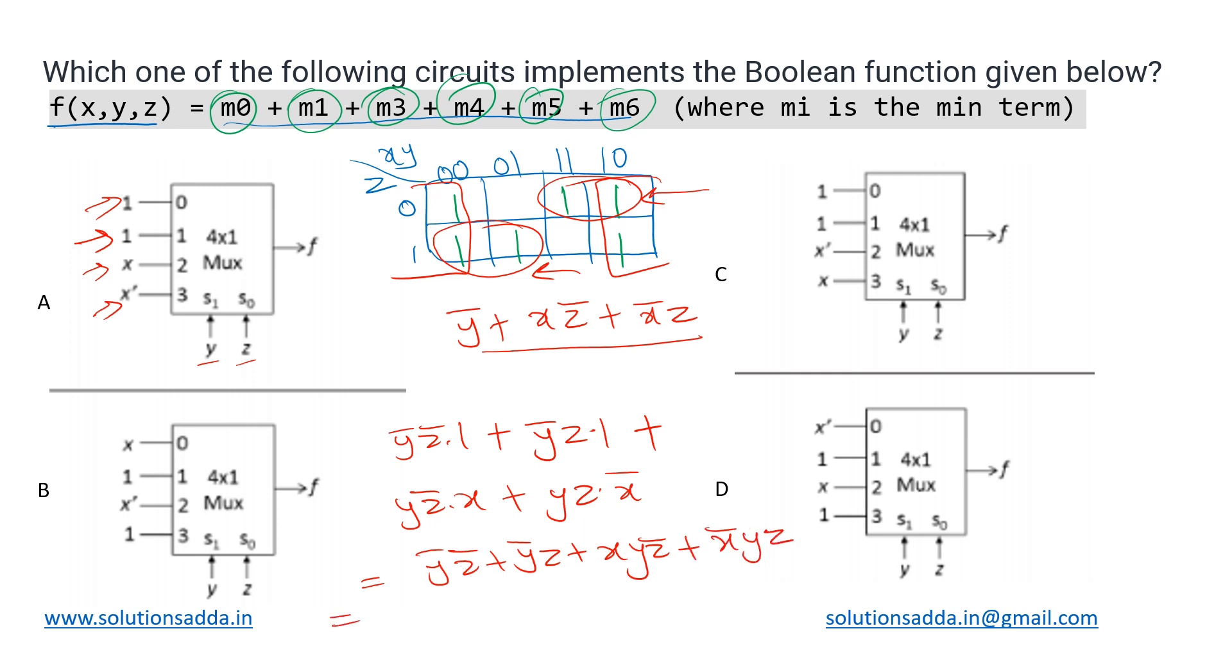Now we can combine these first two terms together. After taking ȳ as common, this z̅ and z will add up to one, so there is no need to write that. Plus, now from the last two terms we can take y common, and that becomes xz̅ + x̅z. Now we can again apply distributive property over this because this is ȳ and y.